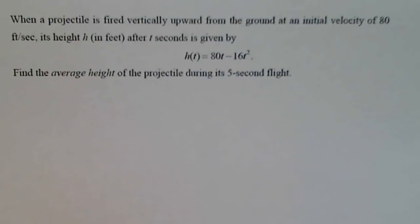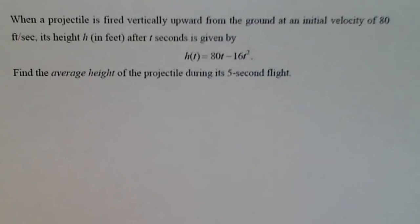When a projectile is fired vertically upward from the ground at an initial velocity of 80 feet per second, its height in feet, t seconds after, is given by 80t minus 16t squared. Find the average height of the projectile during the five-second flight.